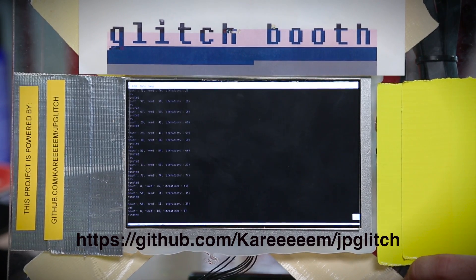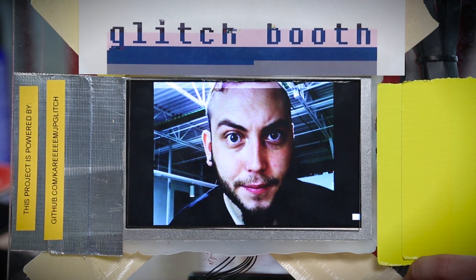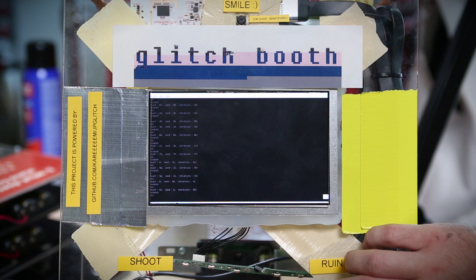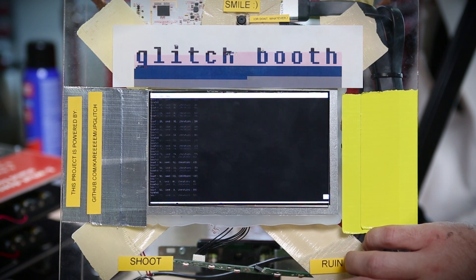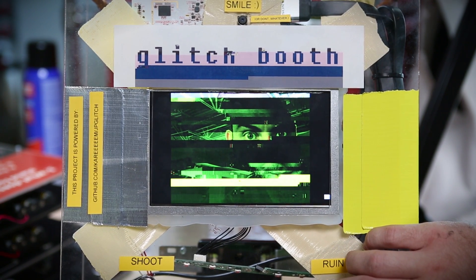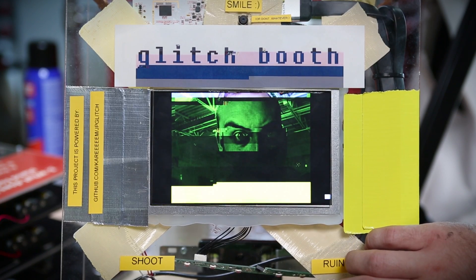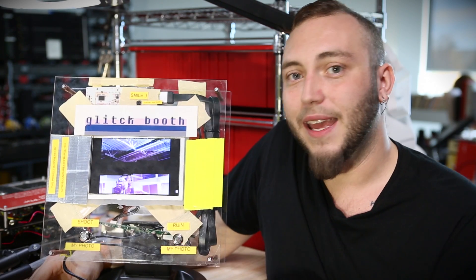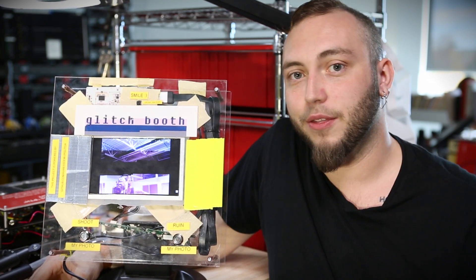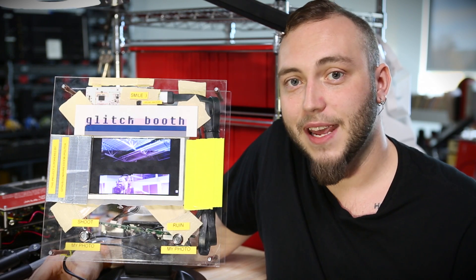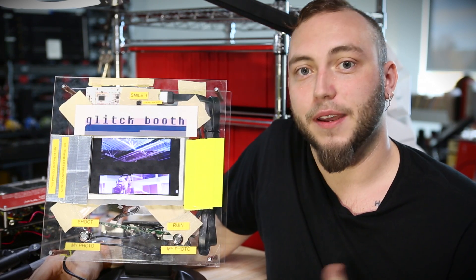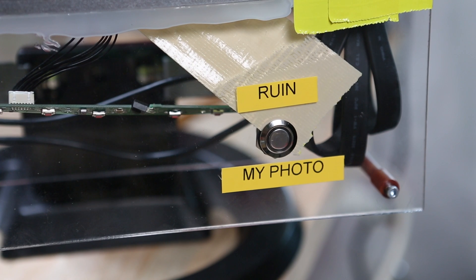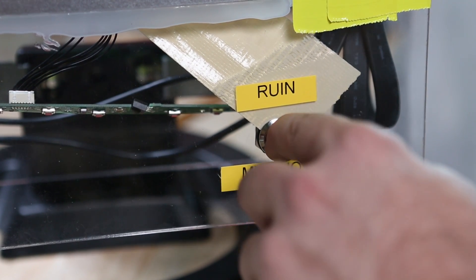The way this is working is it's using a simple library to pull a photo from the camera and save it as a JPEG, and then it's displaying that JPEG using a classic command-line image viewer called feh for Linux. When you press this button, it's taking that file, running it through that Python script that corrupts it, and then displaying that output again using feh. Then it's just waiting for these button presses which are on the GPIO, on pins two and three.